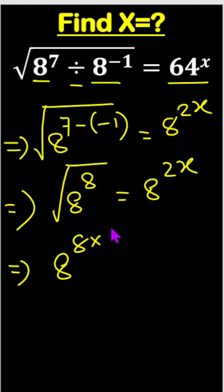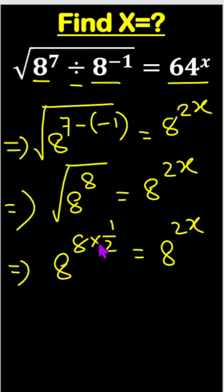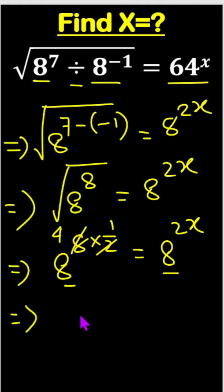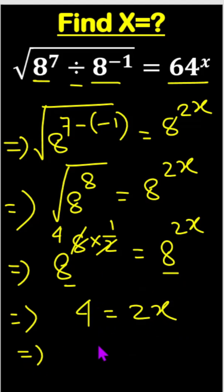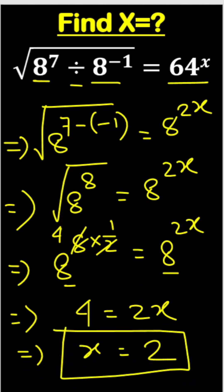This gives us 8 to the power 8 times one-half, equals 8 to the power 2x. So 8 divided by 2 is 4. Now both bases are the same, so the powers are equal: 4 equals 2x. Dividing both sides by 2, x equals 2. This is our answer.